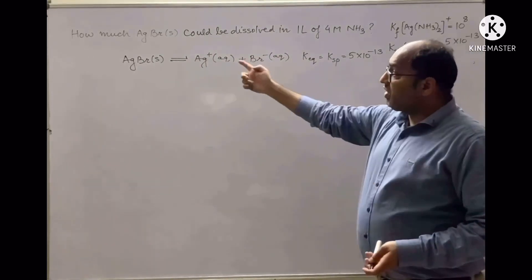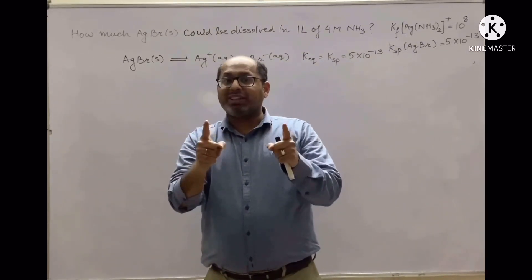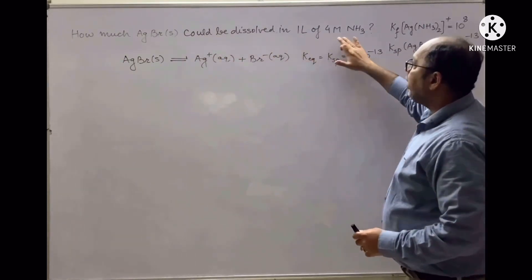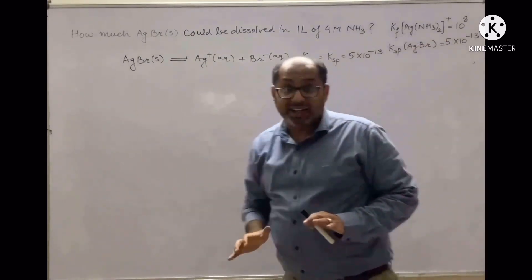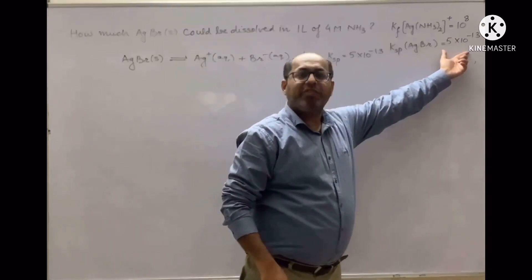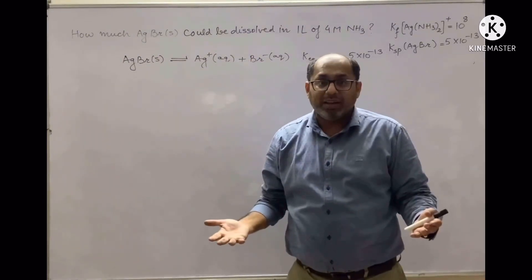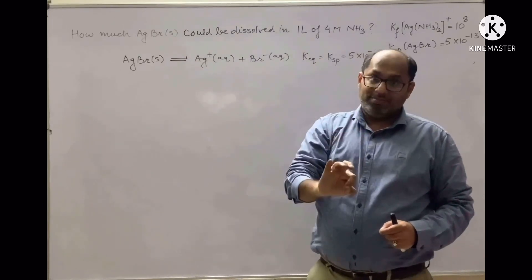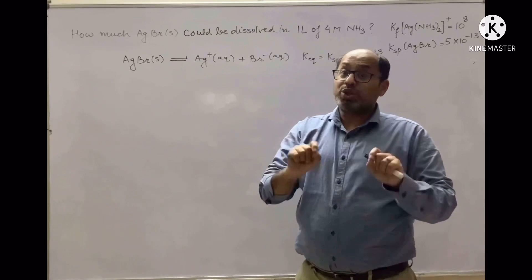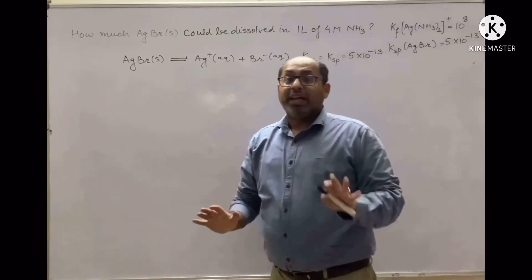You can see there is a problem written at the board, taken from ionic equilibrium. That chapter is very scary but don't worry. The problem asks: how much silver bromide (AgBr) could be dissolved in one liter of 4 molar ammonia solution? The complex formation constant and solubility product of AgBr are given. Solubility means how many moles of a solute can be dissolved in a given solvent at a given temperature until the solution gets saturated — those moles of AgBr dissolved in one liter to achieve equilibrium is called solubility.